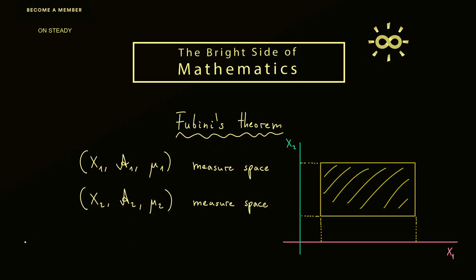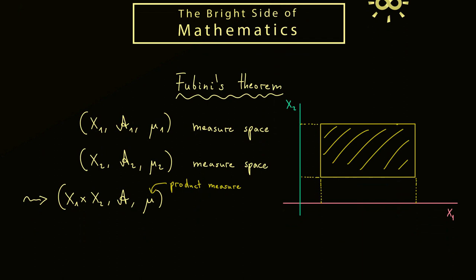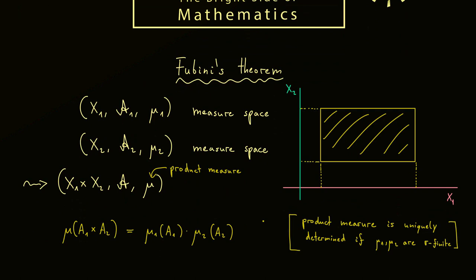We had two measure spaces, X1 and X2. And then we formed a new measure space on the Cartesian product. And the measure mu here is called our product measure. Now if you look at the picture again, you also recall that the product measure fulfills the following rule.